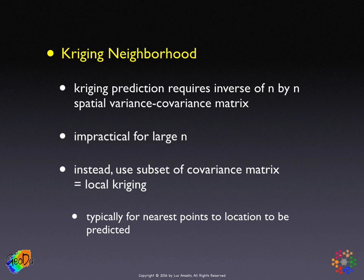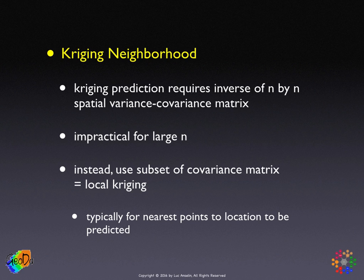So, why use this full variance-covariance matrix? There's actually not a good reason. Because we already know that when the distances become large enough, for all practical purposes there is no covariance between pairs of points. So, rather than dragging all these points along in a large matrix that needs to be inverted — which is a very complex numerical procedure — instead, we take a subset of the covariance matrix.